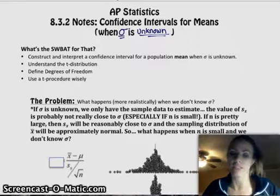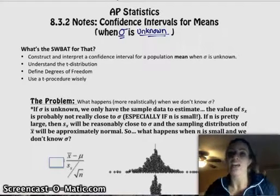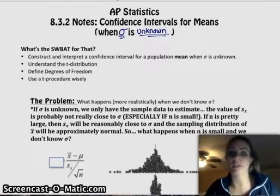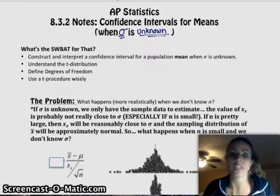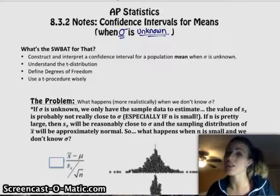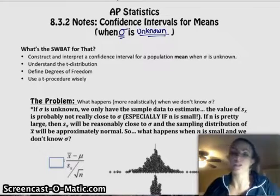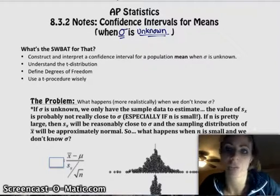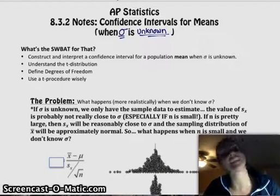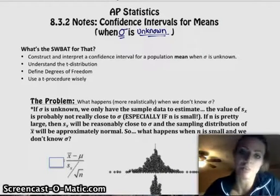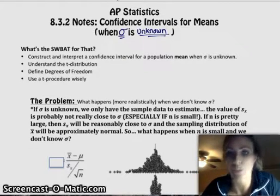Confidence intervals are all still the same thing, but when sigma is unknown, there's a lot more that you have to kind of deal with. So we're going to go over all that stuff, and don't worry, we'll go over stuff in class too, so don't panic. We're going to be constructing and interpreting confidence intervals when sigma is unknown. We're going to understand what the t-distribution is. We're used to the z-distribution, and now we're introducing a new thing called the t-distribution. You're going to find out what degrees of freedom are, and what it means to use a t-procedure in a more wise way.